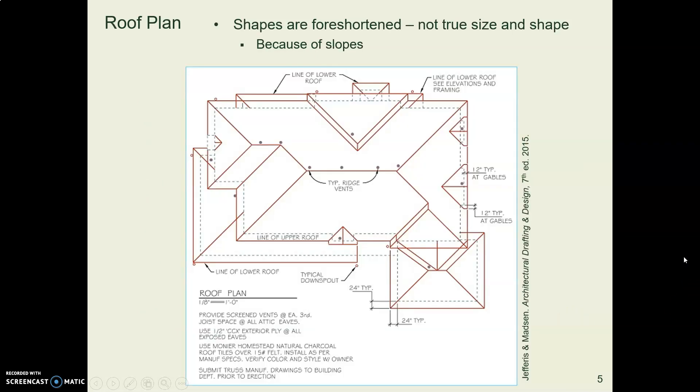Now the thing that's important to remember when you're drawing a roof plan is that these are shapes looking down from the sky at the top of the roof. You are not seeing these shapes true size and shape. They are foreshortened, is what we say. So if you put a scale on this width across here, you'd get some number. That distance is not the actual distance of the roofing.